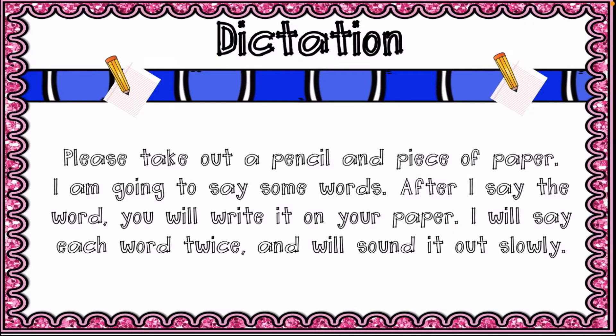Dictation. Please take out a pencil and a piece of paper. I'm going to say some words — after I say each word, write it on your paper. I will say each word twice and sound it out slowly. Number one is 'moon'. Moon. The moon is up in the sky.